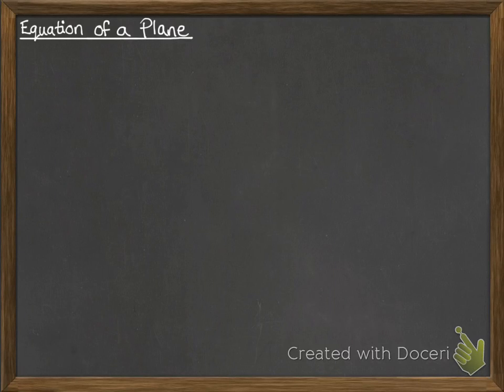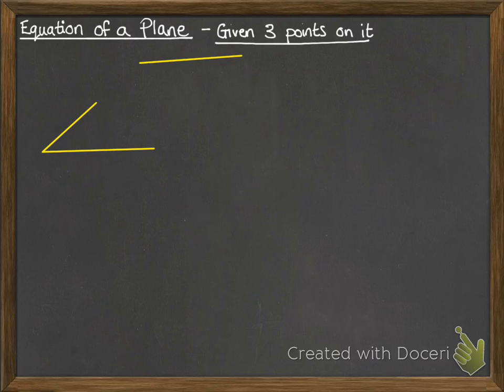Next, we need to know how to find the equation of a plane. So the first way is when we are given three points that lie on the plane. So it looks like this. Here's our plane, and we are told three points there. Once we've got three of them, we can make a plane.